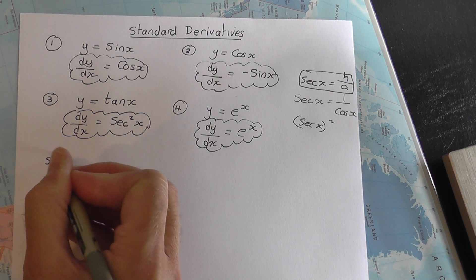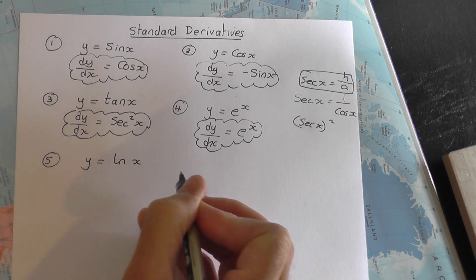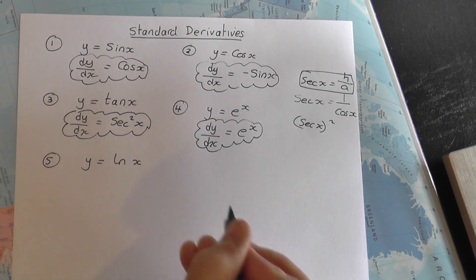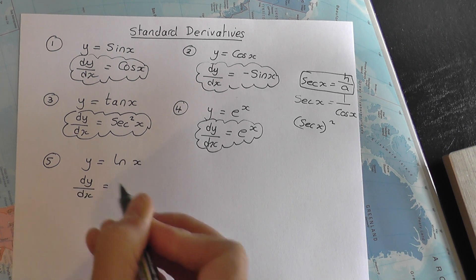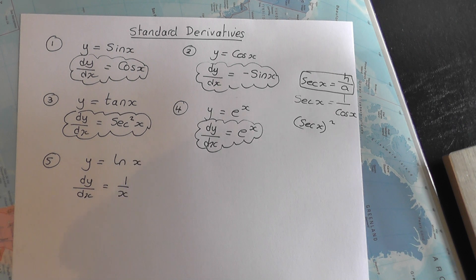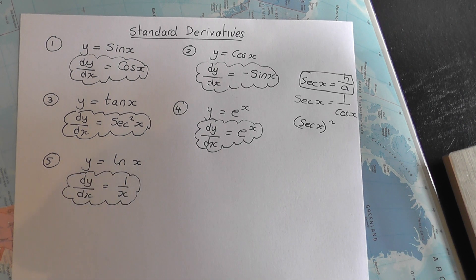The fifth one you need to know is y equals log to base e of x, and that's ln x. A standard result. Again, you don't need to learn where it comes from. dy by dx equals 1 over x. And that needs to be learnt off by heart.